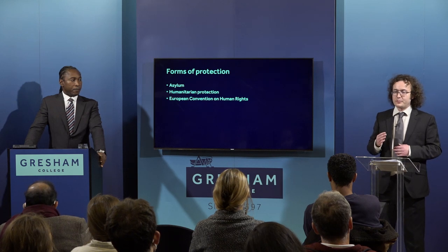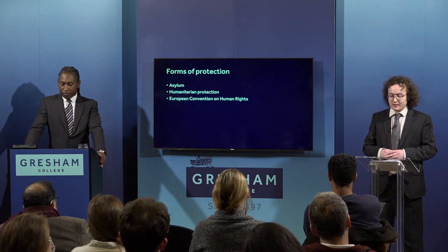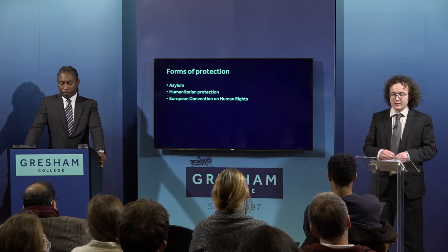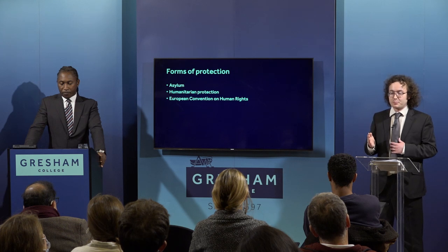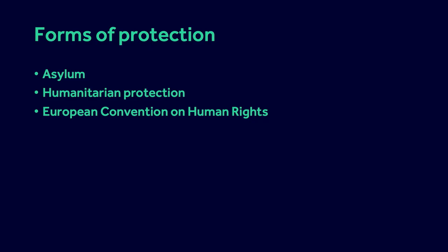I'm now going to hand over to David to talk about how the immigration system impacts people today. I'm going to talk about the various forms of protection available in immigration law for people at risk of harm in their home countries, critically examine the UK's asylum system, and look at the inadequacy of asylum law and the brutality it frequently inflicts on genuine refugees. We're going to be talking about three main forms of protection: asylum, humanitarian protection, and the European Convention on Human Rights.